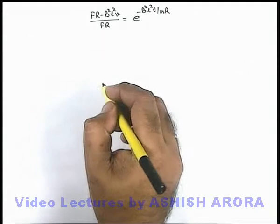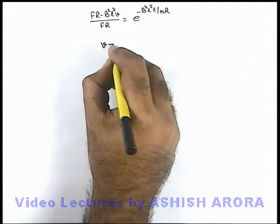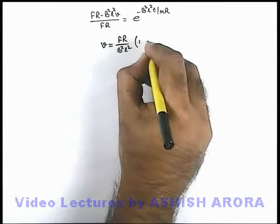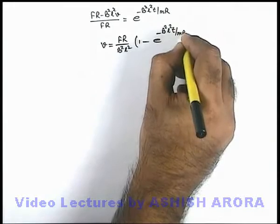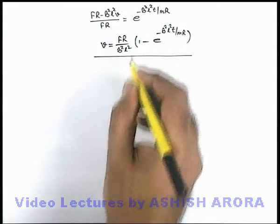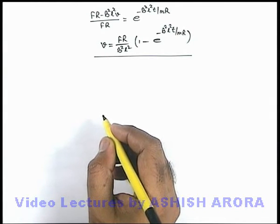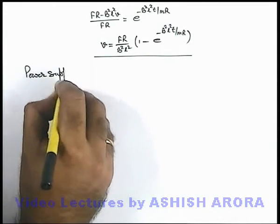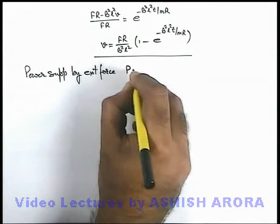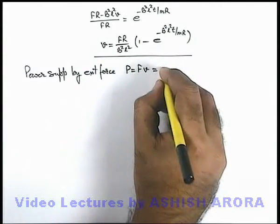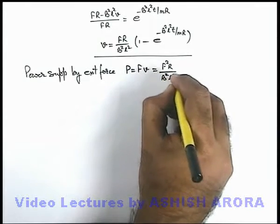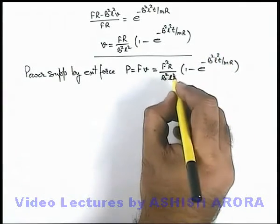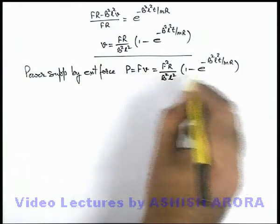Continuing the simplification, we can directly get the velocity of the rod as a function of time: v equals (FR over B²L²) multiplied by (1 minus e to the power of minus B²L²t over mR). This is the velocity of the rod as a function of time, and it is an exponential function. The power supplied by the external force F is P equals Fv, which gives F²R over B²L² multiplied by (1 minus e to the power of minus B²L²t over mR).